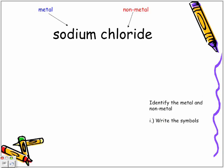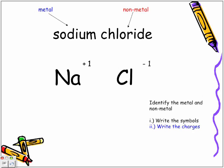So now we go into what I like to call the five-step crossover rule. The first step says write the symbol. So what's the symbol for sodium? Na. What's the symbol for chloride? Cl. Next step says write the charges. So if we look and refer to our periodic table, we'll notice that sodium has a plus one charge, and chloride has a negative one charge.